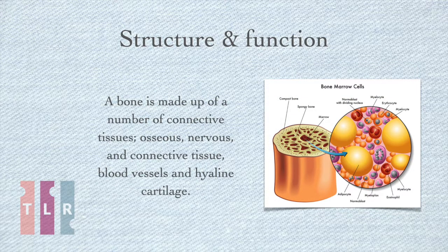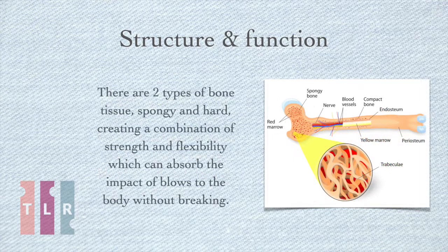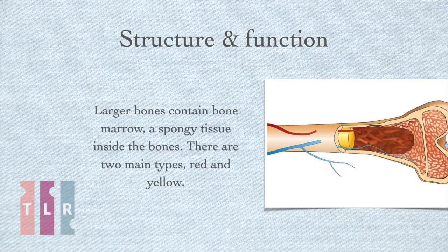A bone is made up of a number of connective tissues — osseous, nervous and connective tissue, blood vessels and hyaline cartilage. There are two types of bone tissue, spongy and hard, creating a combination of strength and flexibility which can absorb the impact of blows to the body without breaking. Larger bones contain bone marrow, which is the spongy tissue inside the bones, and there are two types: red and yellow.